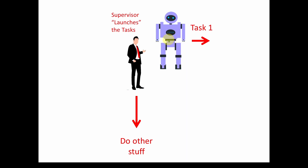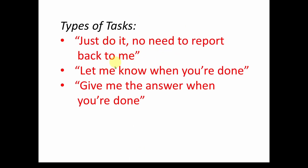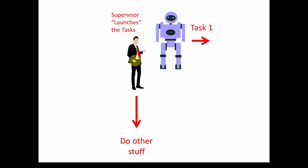This is very similar to concepts you probably already know in software development — having a method. The method either returns void, meaning just go do it and don't return an answer, or it can return a value like a double, or it might just send a notification. We did a video about events and delegates — maybe it just initiates an event when done. This is nothing new; it's basically different types of tasks and how they respond.